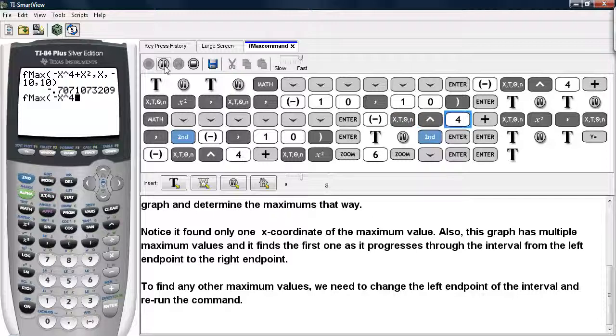And tell it the variable. And this time I'm going to tell it to begin the interval at the left endpoint of my previous calculation, and run up to the right endpoint again, positive 10.